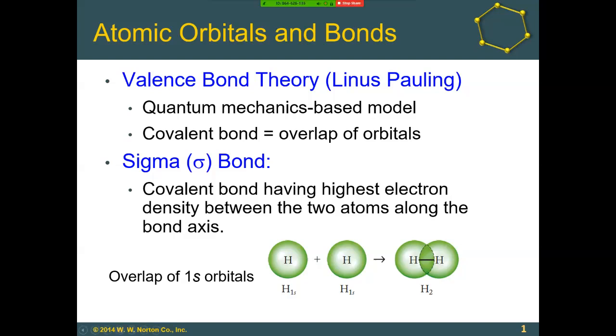When overlap happens directly between two atoms, as in the H2 molecule, this is known as a sigma bond. This orbital overlap results in a single bond where electron density is highest between the two atoms along the bond axis. In hydrogen, these are spherical s orbitals. You can see the darker shading of green between the two hydrogens.